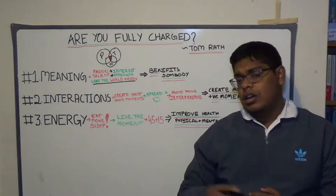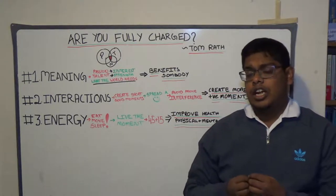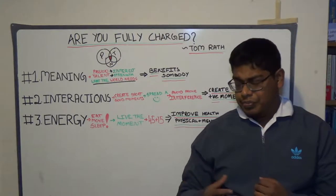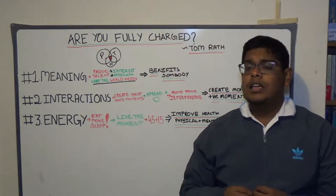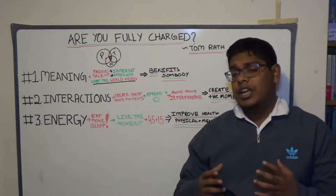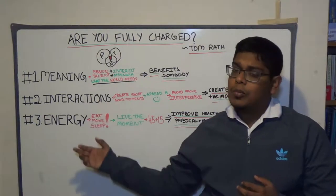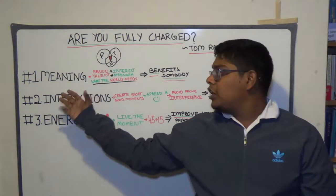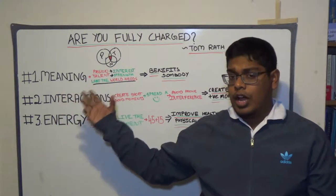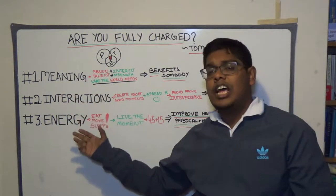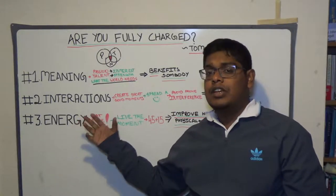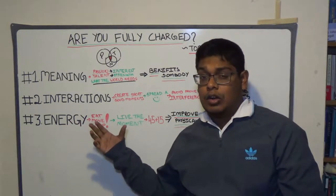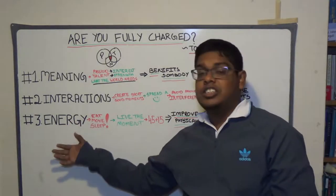In the book, the author describes how to improve one's quality of living. He suggests three critical points: one should have a meaningful life, have many positive interactions with people around them, and live with full energy.